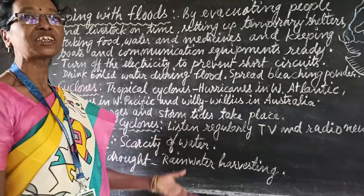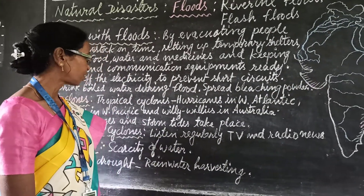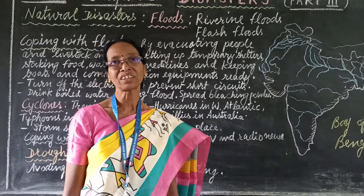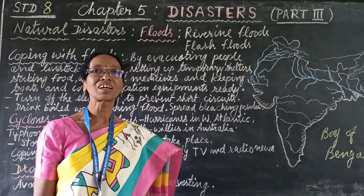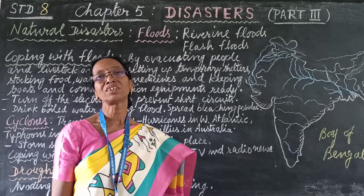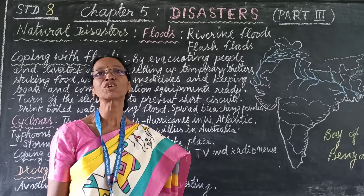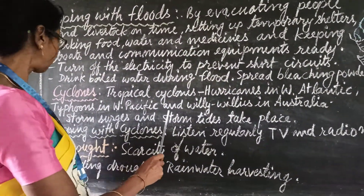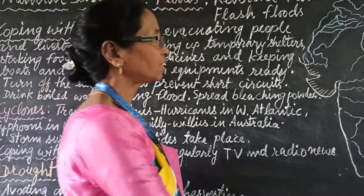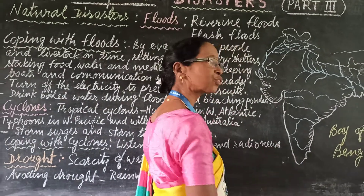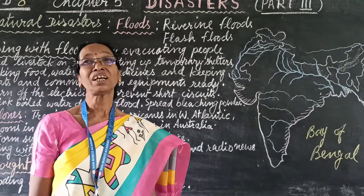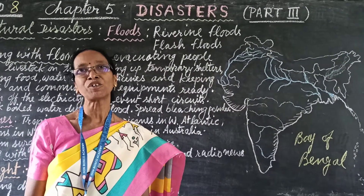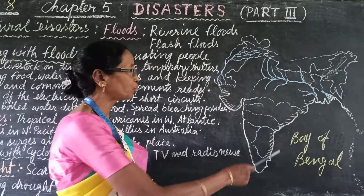Storm surges are very high sea waves, like a tsunami. Storm tides are high tides that increase and strike the coast, very widely affecting and destructing the coastal regions. When there is a cyclone, if there are forested areas on the coast, the speed of the wind and its destructive power can be reduced.